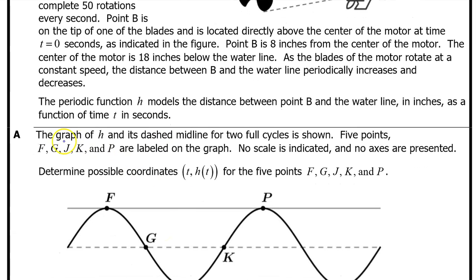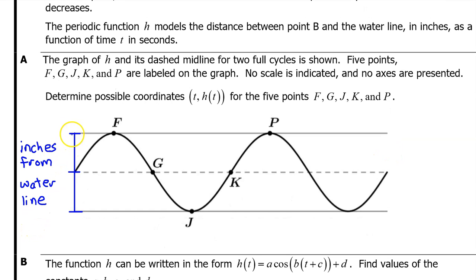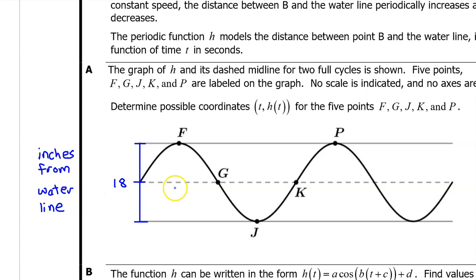Part A. The graph of H and its dashed midline for two full cycles is shown. Five points F, G, J, K, and P are labeled on the graph. No scale is indicated and no axes are presented. Determine possible coordinates for the five points. First, let's find three values on the vertical scale: the maximum distance from the waterline, the minimum distance, and the middle distance. The midline represents the center of the motor, which is 18 inches from the waterline, so we put 18 on the midline.